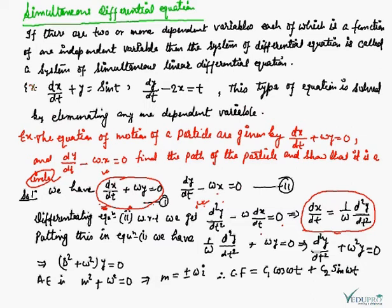Now we will put this obtained value of dx/dt into equation 1. This gives us (1/ω)(d²y/dt²) + ωy = 0, which implies d²y/dt² + ω²y = 0.